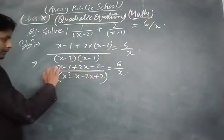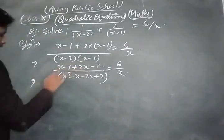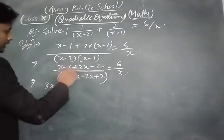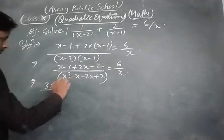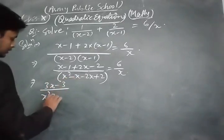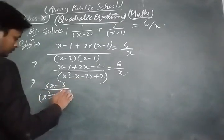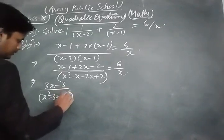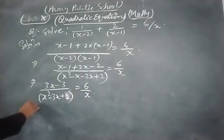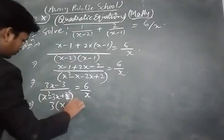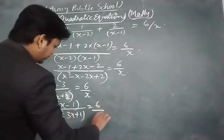Combining like terms: 2x + x = 3x, and −2 − 1 = −3. So the left side becomes (3x − 3) / (x² − 3x + 2) = 6/x. We take 3 as common from the numerator to get 3(x − 1) / (x² − 3x + 2) = 6/x. The 3 and 6 simplify, giving (x − 1) / (x² − 3x + 2) = 2/x.